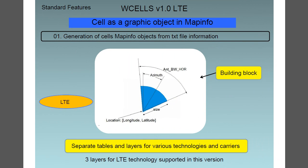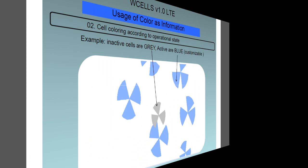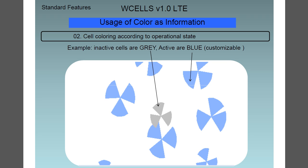When it comes to WCELLS features, first and foremost it is the generation of cell mapping for objects from text file information, and this particular version supports three layers of LTE technology. Secondly, the program uses color to denote information, and the cell coloring is according to the operational state. For example, the inactive cells are marked gray and the active ones are blue, and that is of course customizable from within the software.